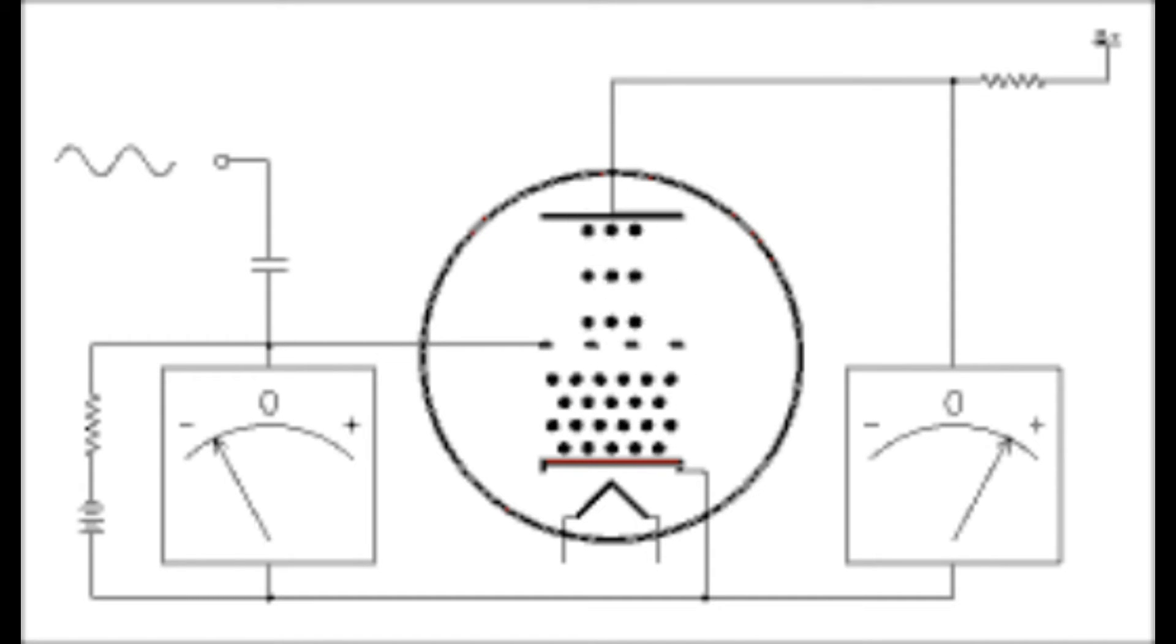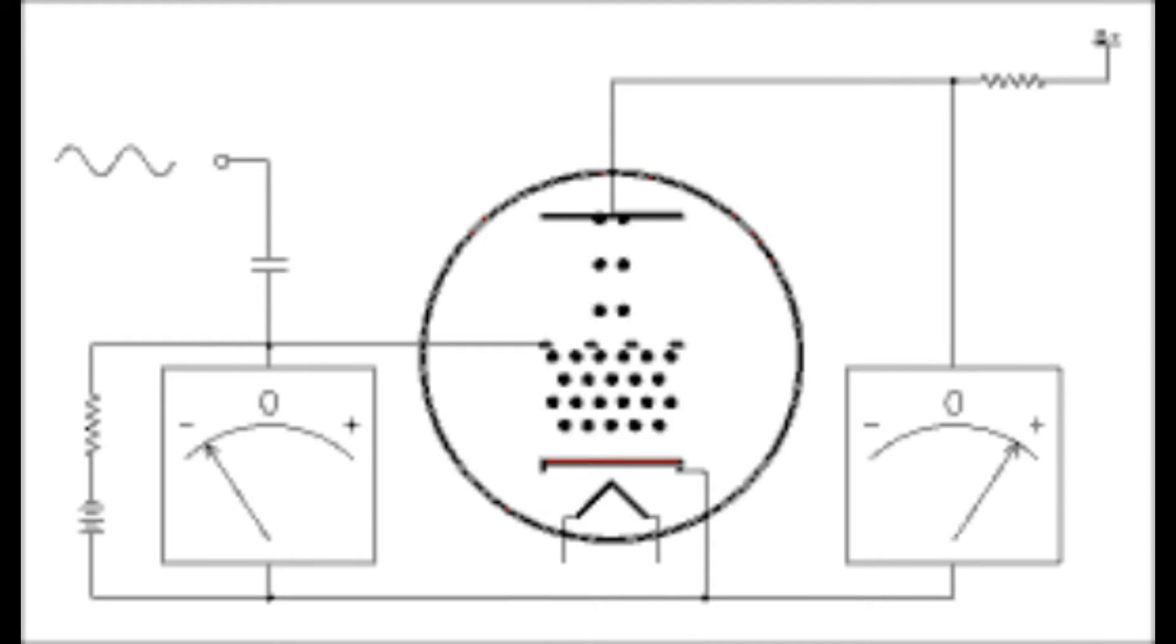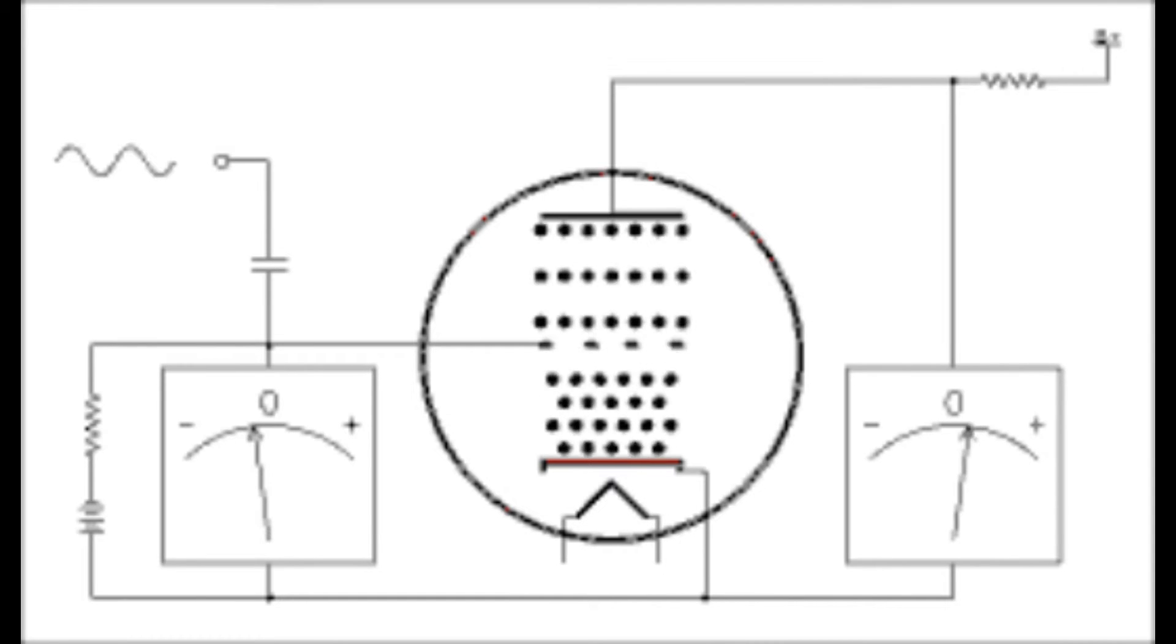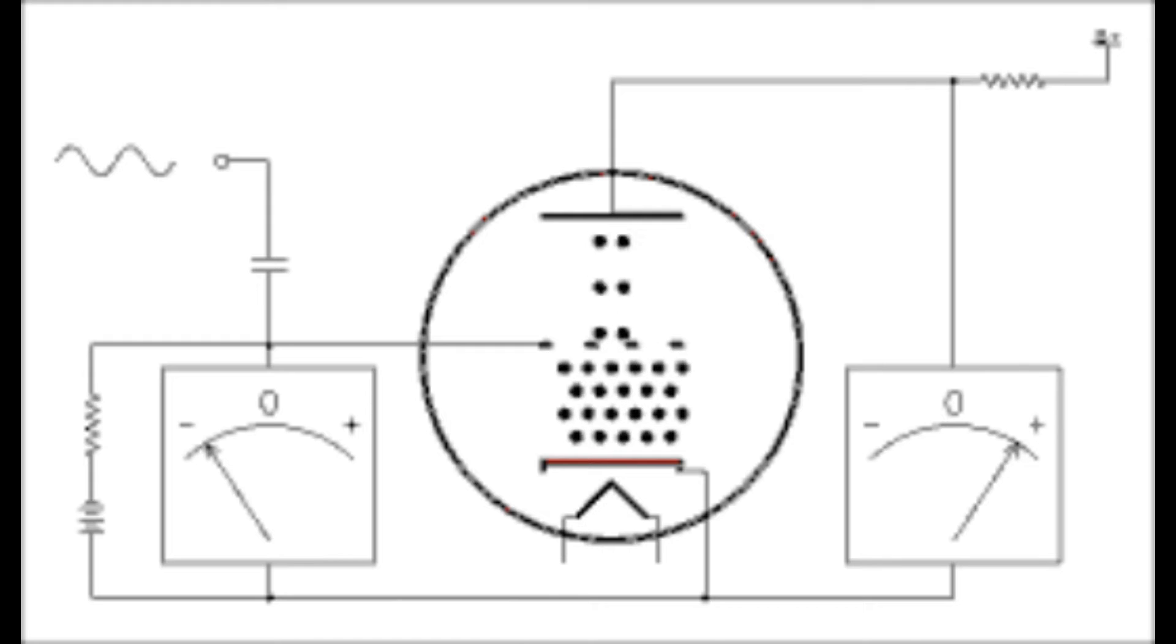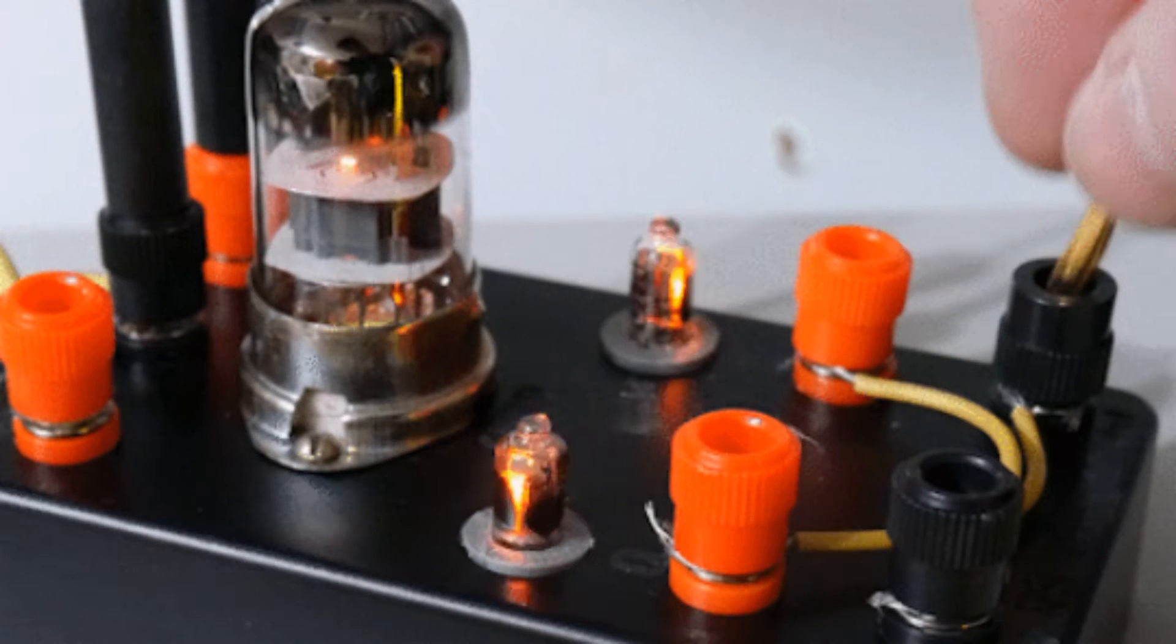But it was the audacious Lee de Forest who dared to dream beyond the confines of existing knowledge. In 1906, he introduced the world to the Audion, a triode vacuum tube that could amplify signals, setting the stage for a technological revolution.